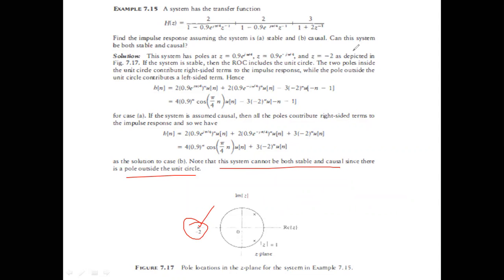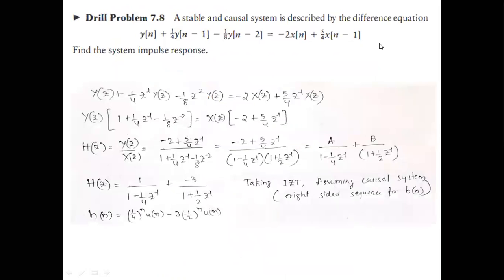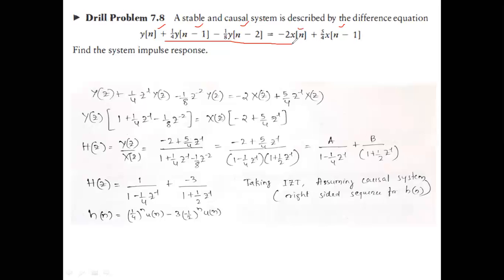The trick to this chapter is that you need good knowledge of inverse Z-transform, properties, and partial fractions. Here is a new question: given a stable and causal system described by a difference equation, find the transfer function. Earlier they gave H(n) or the transfer function directly; now they give the difference equation and you must arrive at the impulse response from it.